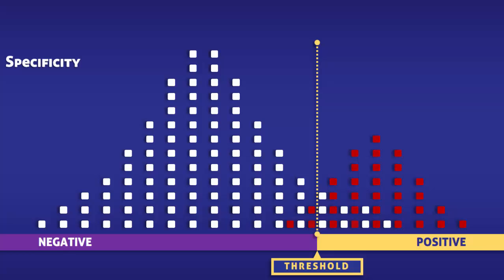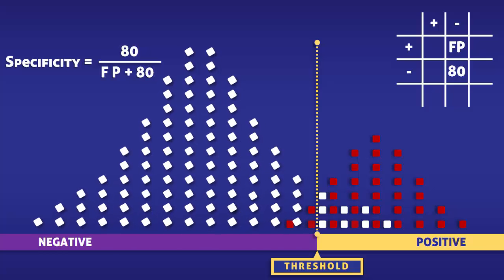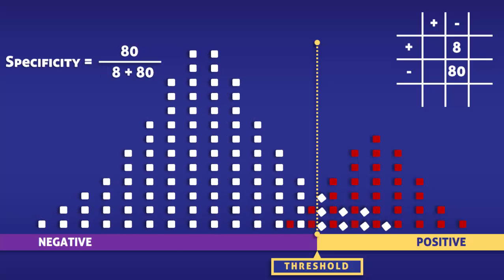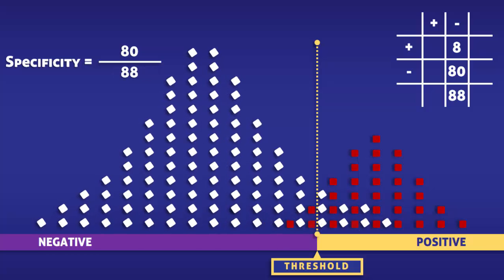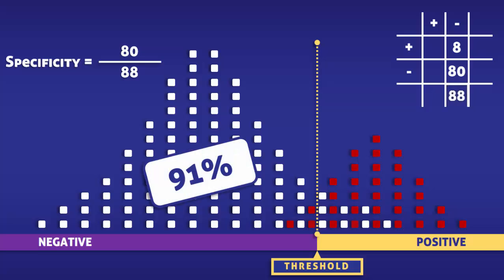To calculate the specificity, we must divide the number of true negatives by the total number of people without the condition. In this cohort, there are 80 true negatives and 8 false positives, thus there are 88 people without the condition. By dividing 80 by 88, we find that the specificity of the test is about 91%.